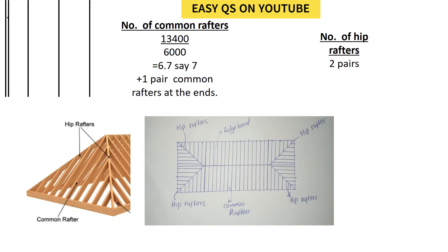Now we go to the common rafters. The principal rafters are on the trusses, so the principal rafters are equal to the number of trusses times two. Common rafters are in between the principal rafters.